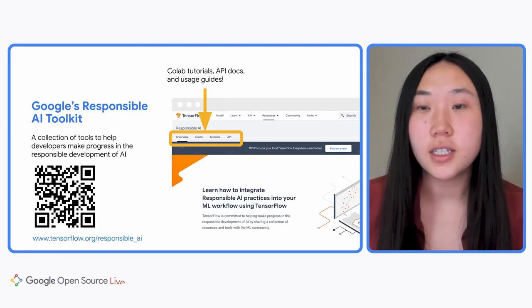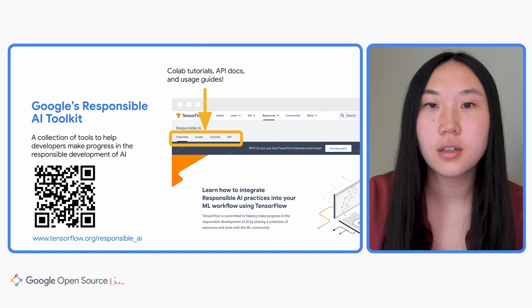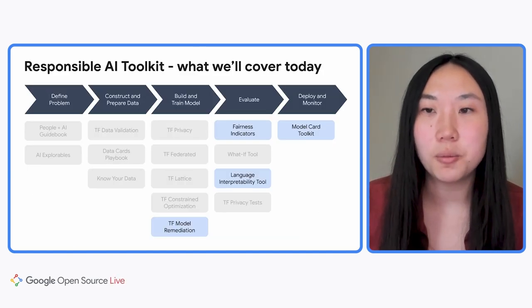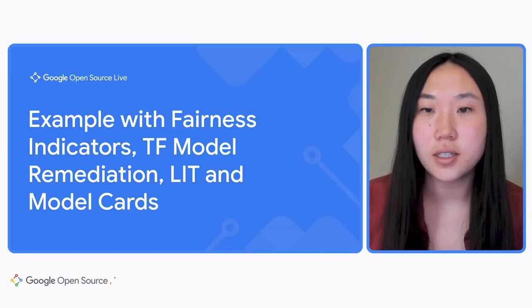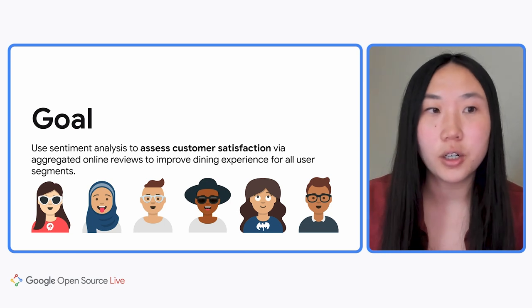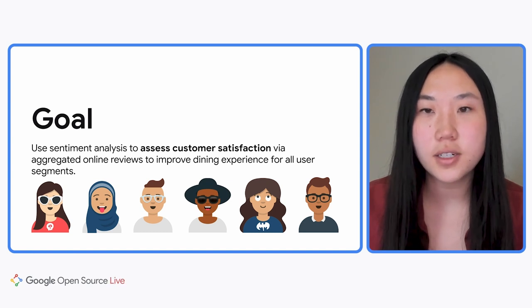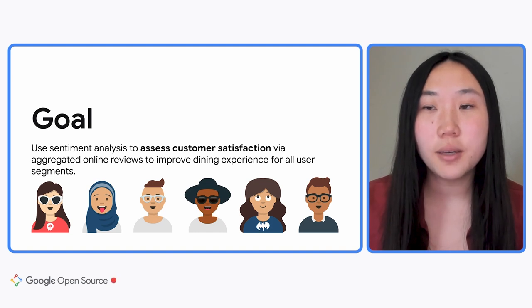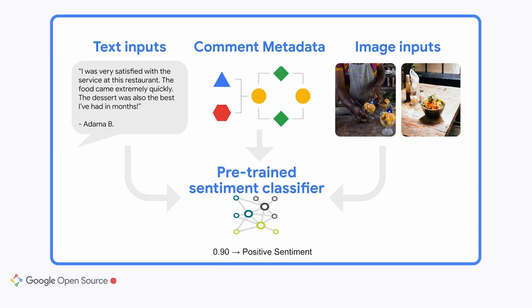They're built in a flexible way so they can fit in with your workflow. We encourage you to take a deeper look at these resources online, which include documentation, guidance, and Colab tutorials. Today, we're going to focus on four specific tools that can help you evaluate and remediate your models for bias and also communicate details about your model to relevant stakeholders. So you can imagine that you're the owner of a new restaurant chain and your customers are leaving online reviews about their experience.